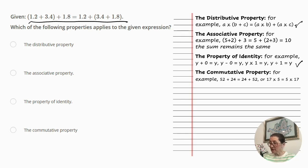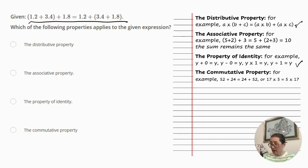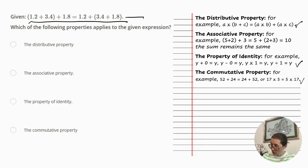The last one is the commutative property. The commutative property can only be used with addition and multiplication — we can change the position of the numbers, but it does not change the sum or the product. For example, 52 plus 24 equals 24 plus 52, or 17 times 5 equals 5 times 17. Looking at our equation, it matches exactly the associative property, so the sum remains the same regardless of where the parentheses are.